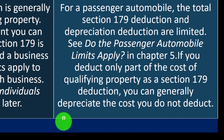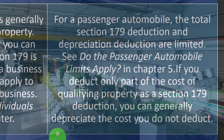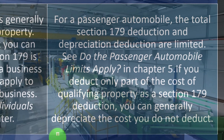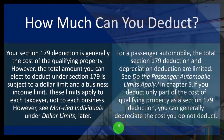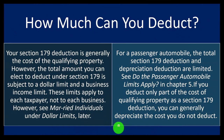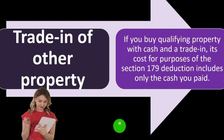See the passenger automobile limit in chapter five. If you deduct only part of the cost of qualifying property as a Section 179 deduction, you can generally depreciate the cost you did not deduct. So if you're limited in the amount you can deduct in the first year and can't deduct the full amount, you may still be able to take the amount you didn't get to deduct and depreciate it like normal — using something like MACRS depreciation, for example, depending on the type of property.